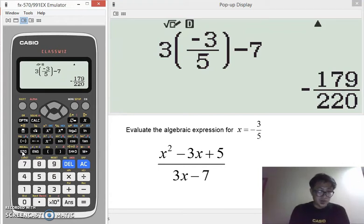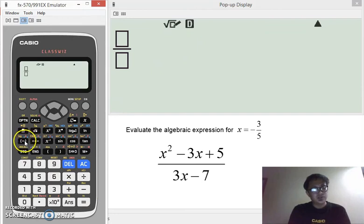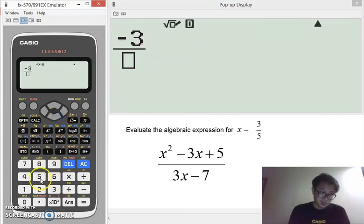So, doing this problem using the STO button will help us a lot and it will be easier. So, first input negative 3 over 5, the value that we wish to assign there, and then press the STO button. Now, notice when pressing the STO button, this will appear.